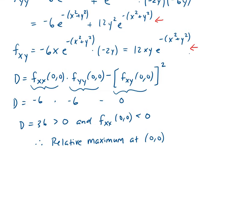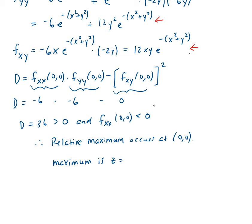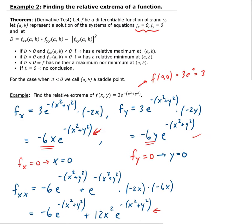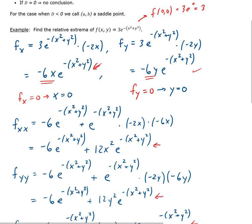So the relative maximum occurs at the origin (0, 0), and the maximum value is z = 3. To summarize: we found the critical point (0, 0) by setting both partials to zero, confirmed it was a relative maximum using D > 0 and fxx < 0, and plugging back into the original function gave z = 3.